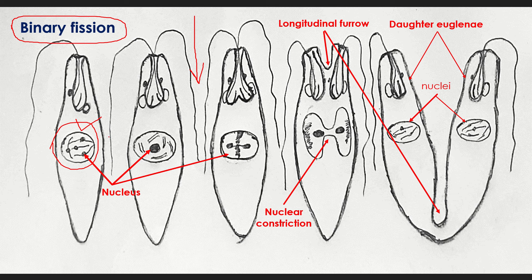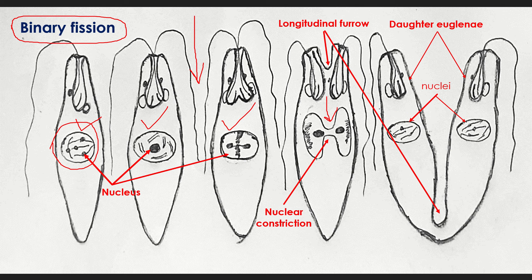Each chromosome then splits longitudinally into two daughter chromosomes, also called chromatids. In the metaphase stage, the paired chromatids lie in the longitudinal plane. In the anaphase stage, the paired chromatids separate and move towards their respective poles. In the telophase stage, the constriction in the nuclear membrane deepens and finally separates the nucleus into two daughter nuclei.